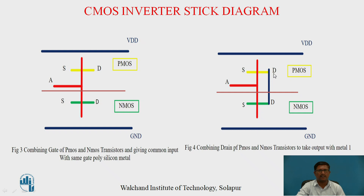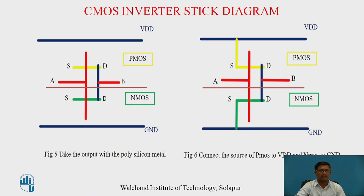In figure 4, connect the drain terminal of the NMOS and the drain terminal of the PMOS — they should be shorted, and the output is taken from this common drain. In figure 5, the output B is taken from the common drain as shown. In figure 6, the source terminal of PMOS is connected to VDD power supply and the source of NMOS is connected to ground.